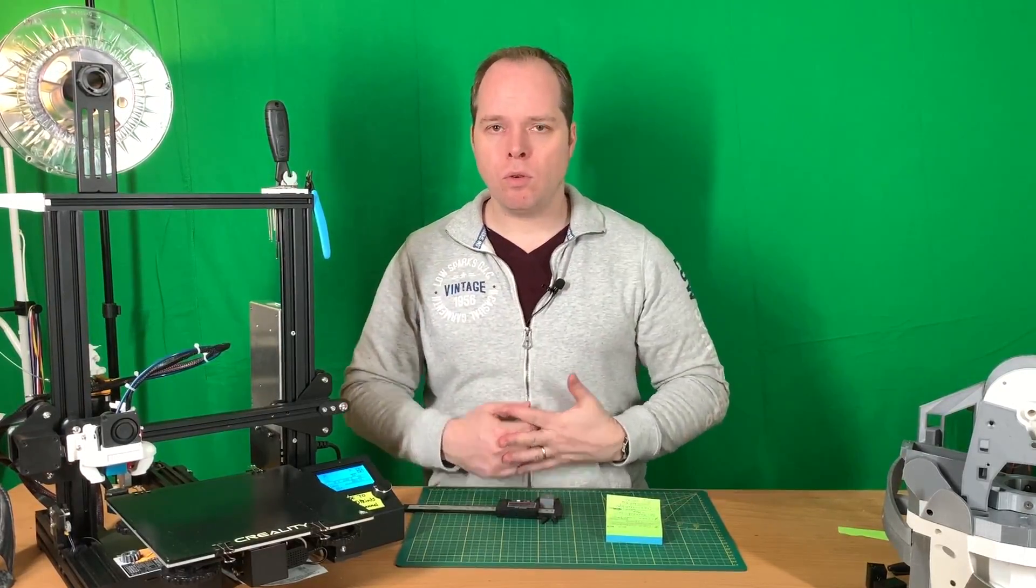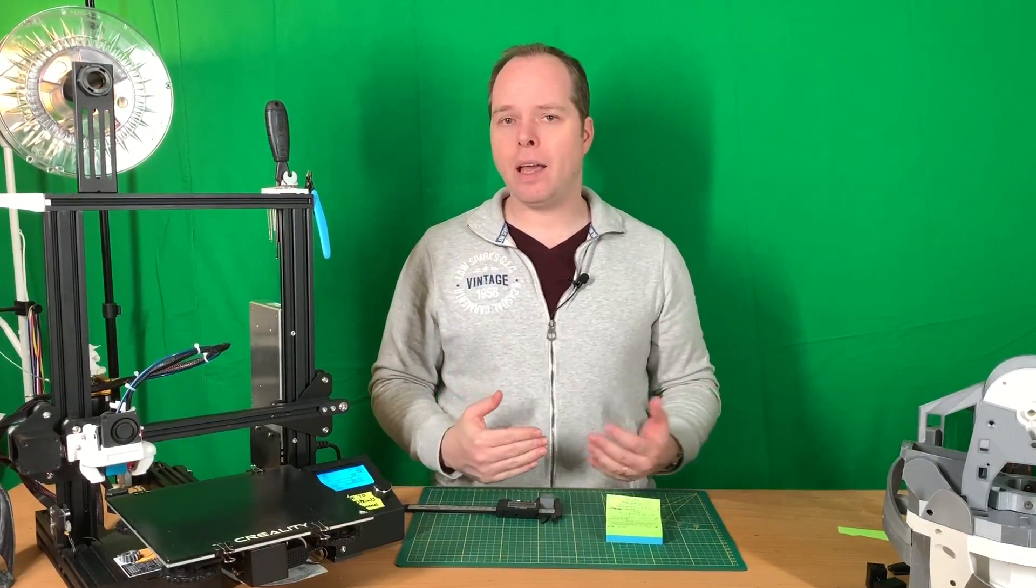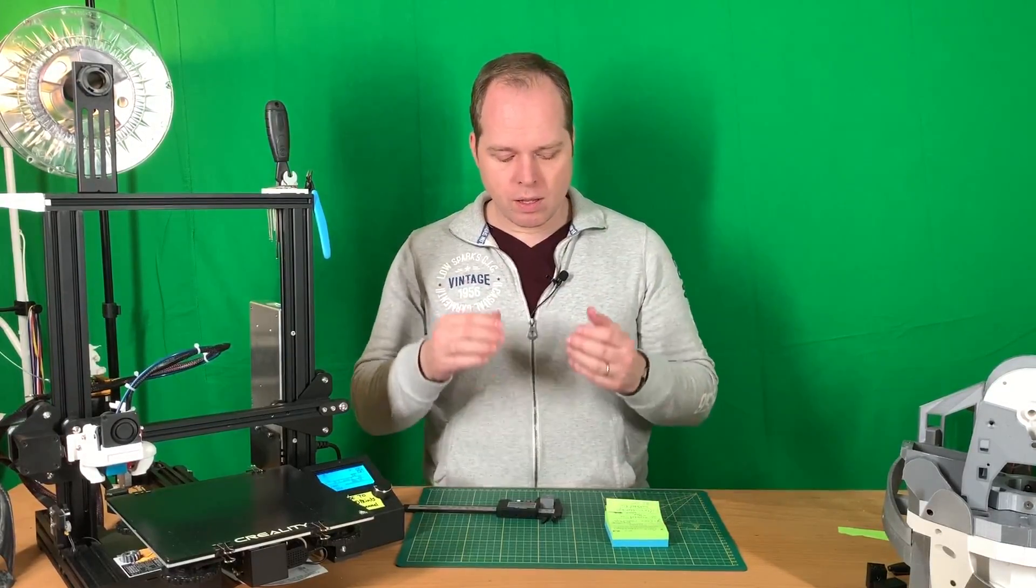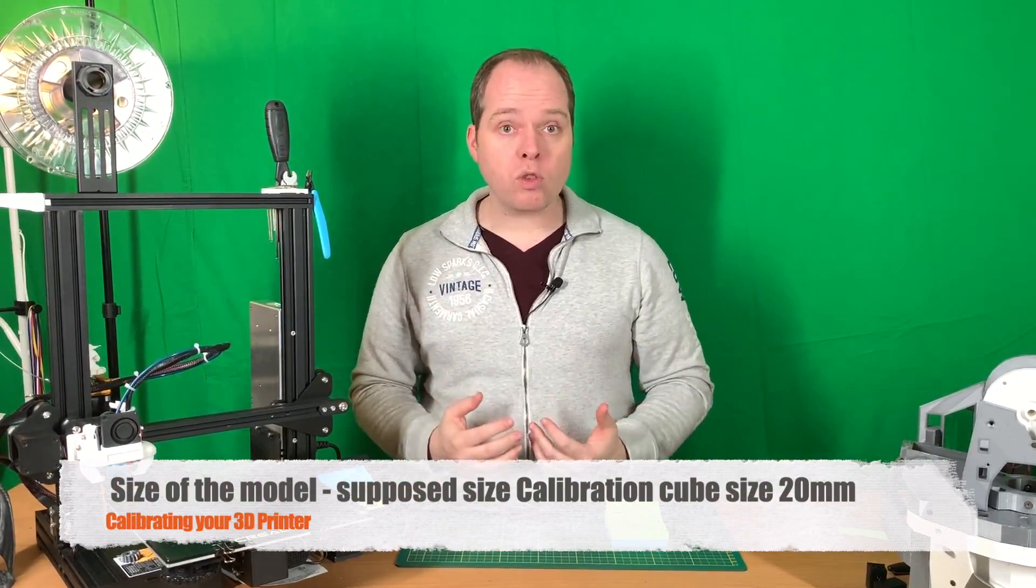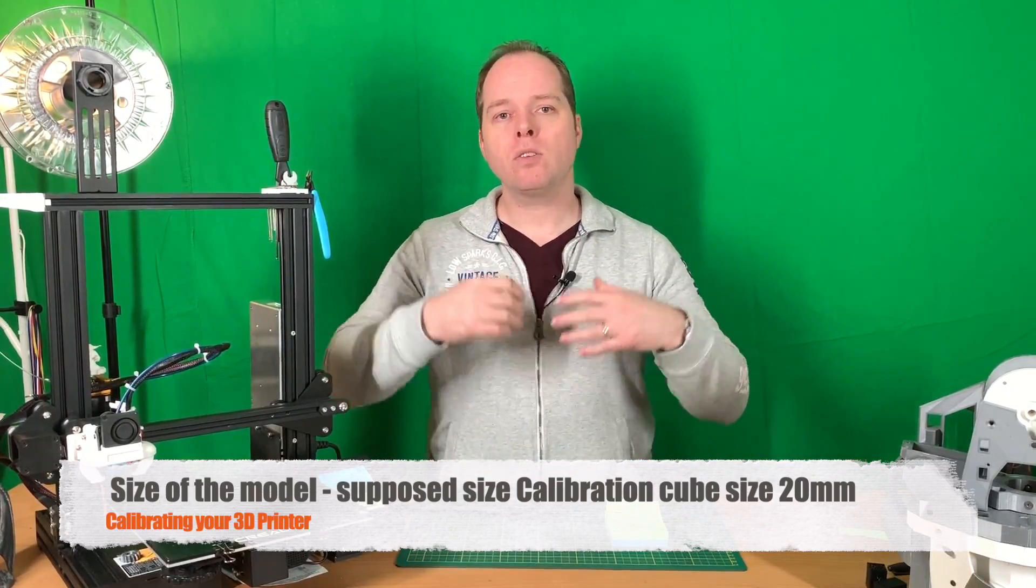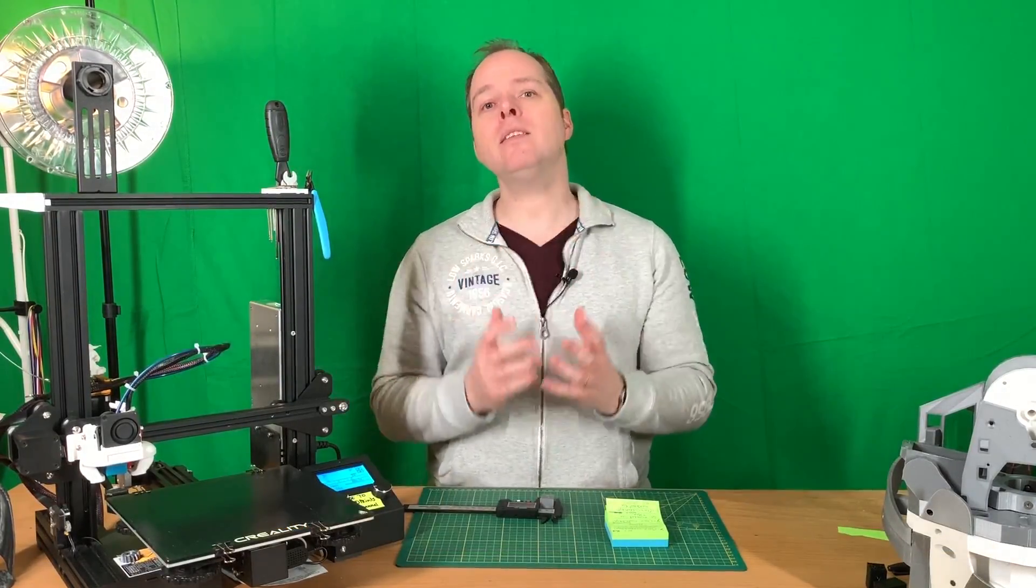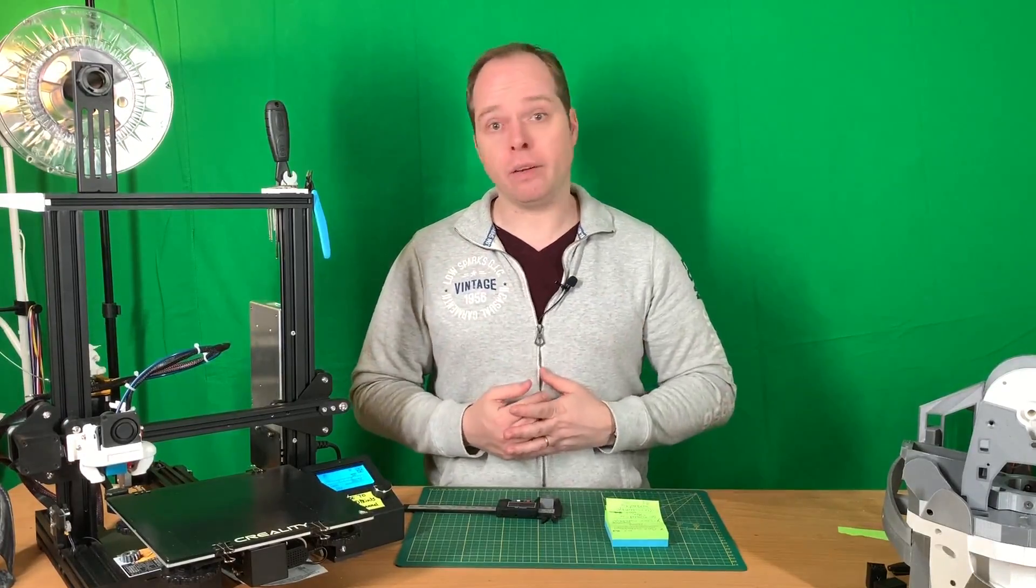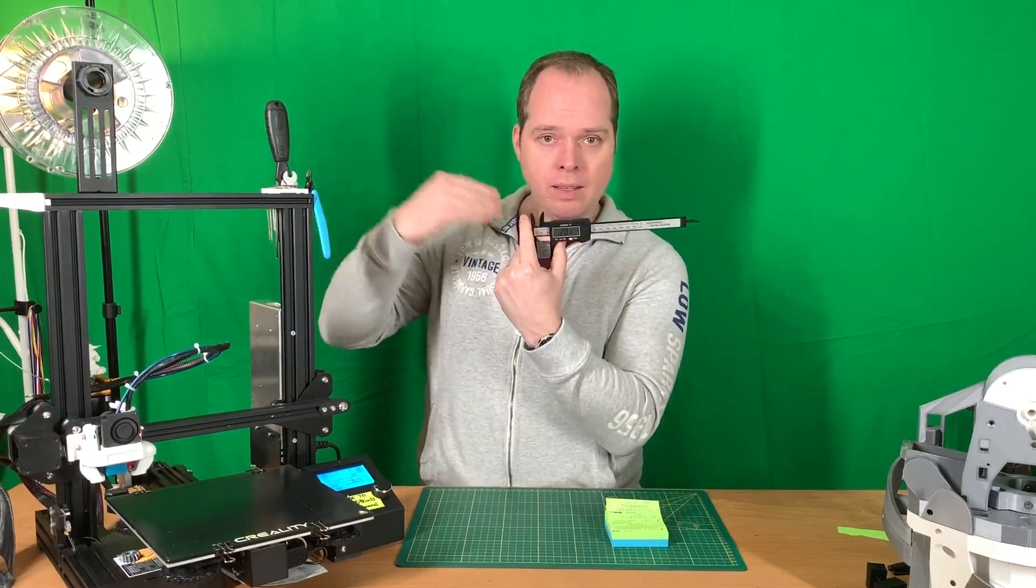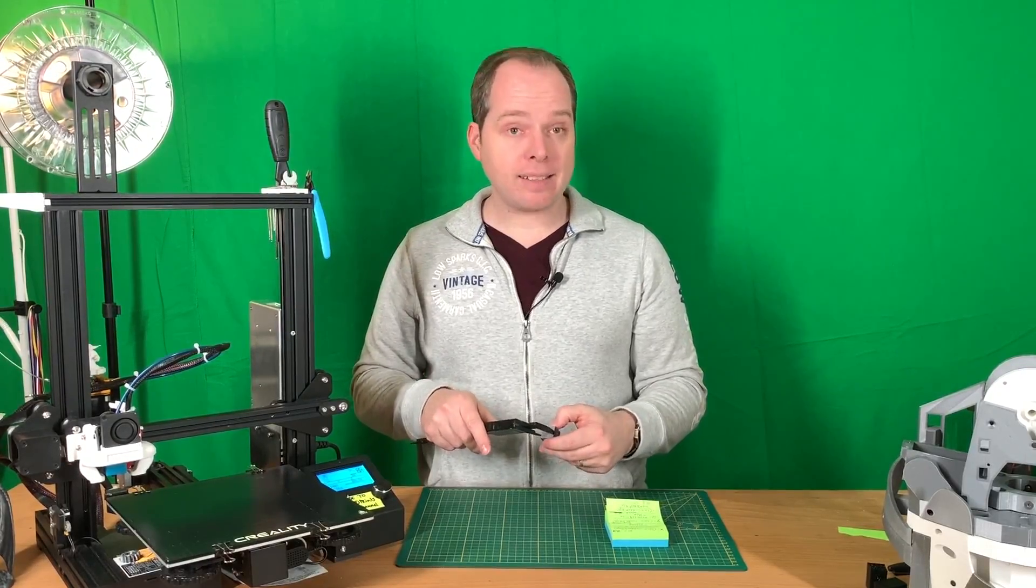When you are going to calibrate your 3D printer—the X-axis, the Y-axis, and the Z-axis—we are going to use one formula. That is the size that it's supposed to be. In this case it's a 20 millimeter calibration cube, so in every direction, in every axis, it should be 20. So that is our first number that we're going to write down. My 3D printer in the Y-axis is well calibrated. We are going to check the X-axis as well.